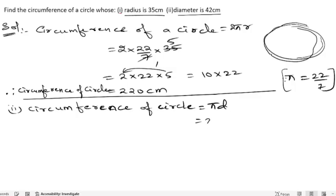And d is 42. So 7 ones are 7, 6 are... So we got 22 into 6. So 6 twos are 12, 6 twos are 12 plus 1 is 13. So 132 centimeters.